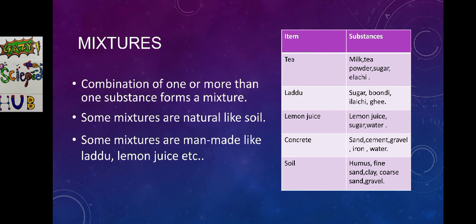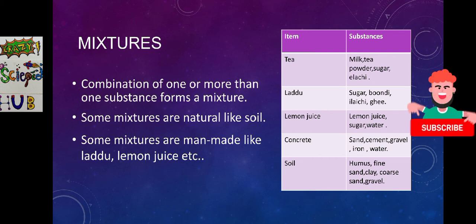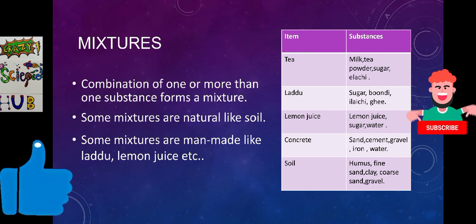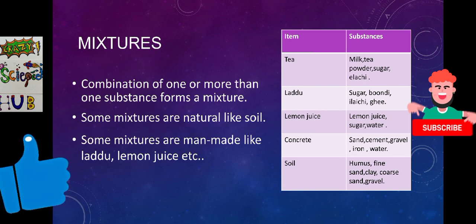Some mixtures are natural like soil. Some mixtures are man-made like laddu, lemon juice, tea, concrete and so on. These are all the examples of mixtures. And finally, we are going to conclude this part 1. In the next part, we are going to discuss the different methods used to separate these mixtures. They are hand-picking, winnowing, sedimentation, decantation, sieving, filtration, crystallization, distillation, sublimation and chromatography. Let us wait for that part and be well.